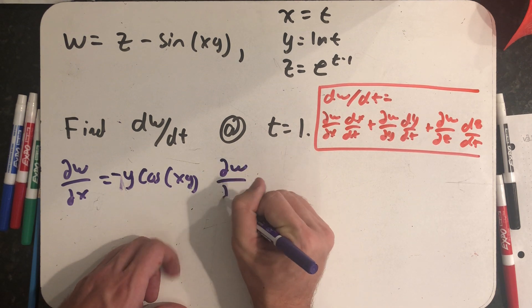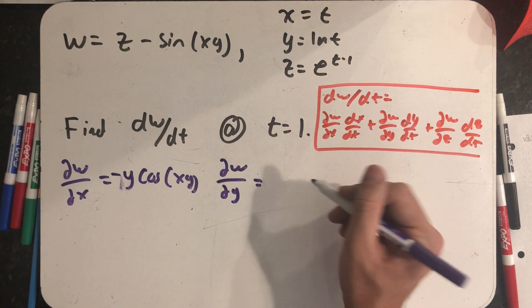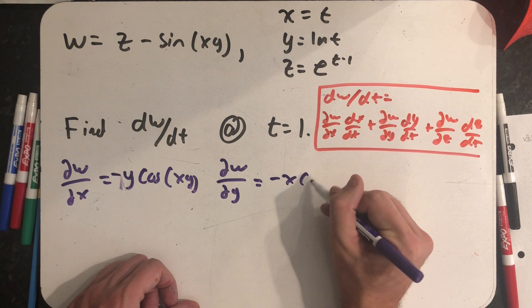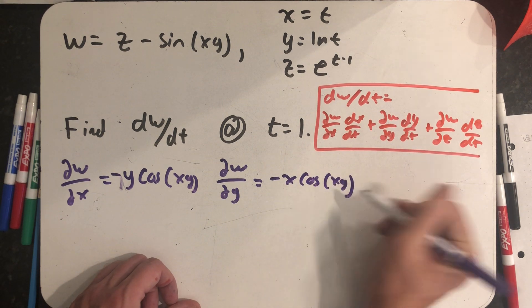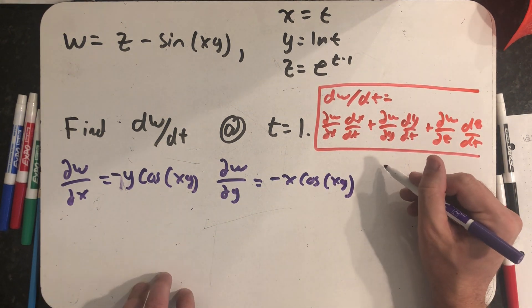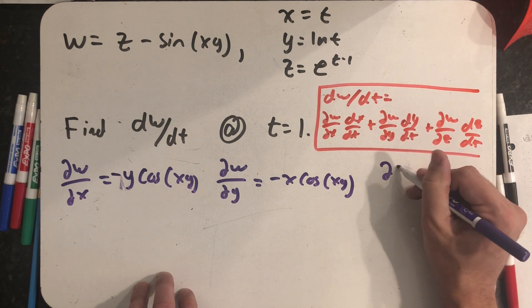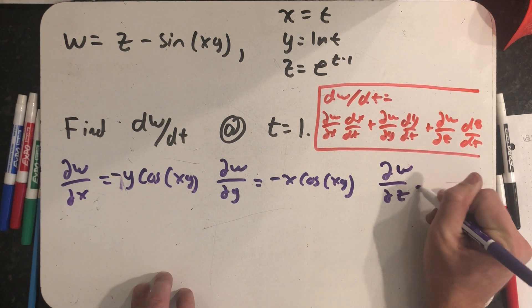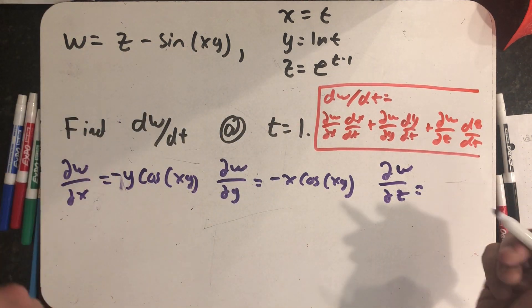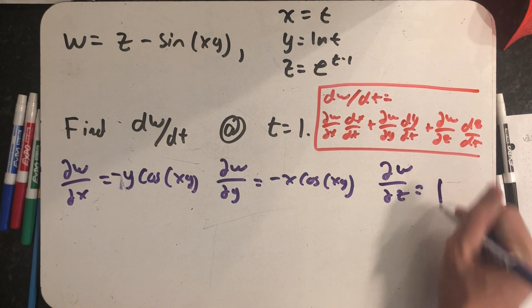All right, so partial of w now with respect to y, very similarly minus x cosine of xy. And then finally a partial with respect to z, and this is the hard one. I'm lying. So the partial of w with respect to z: this is a constant goes away, the derivative of z with respect to z is, I hope, one.